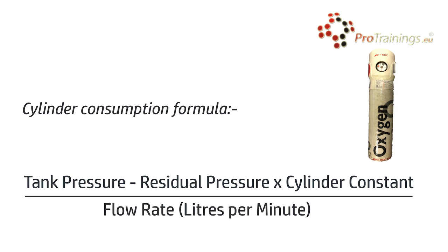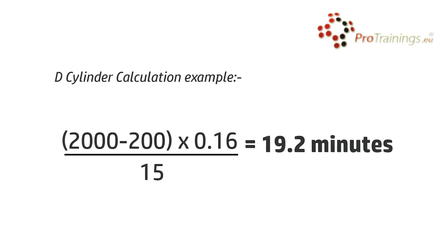Now let's calculate how long a D cylinder will last at 15 litres per minute. The formula is: tank pressure minus residual pressure, multiplied by the cylinder constant, divided by the flow rate — this gives the time in minutes. So: 2000 psi minus 200 psi equals 1800 psi. Multiply 1800 by the constant 0.16 to get 288. Divide 288 by 15 litres per minute to get 19.2 minutes, which rounds down to 19 minutes.